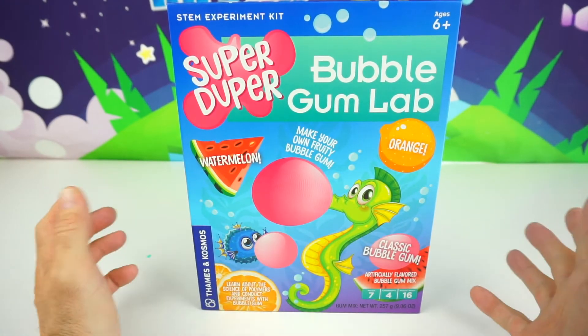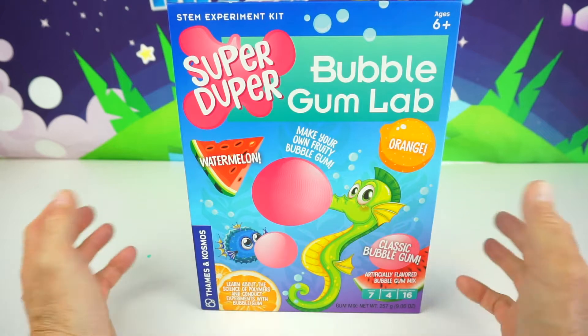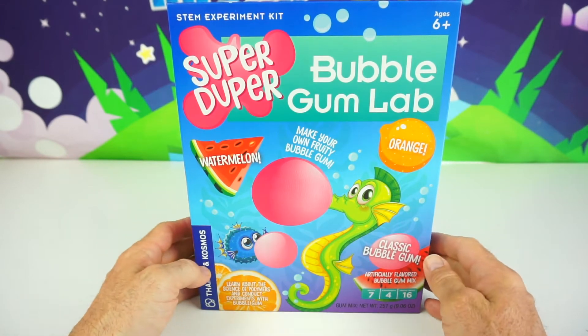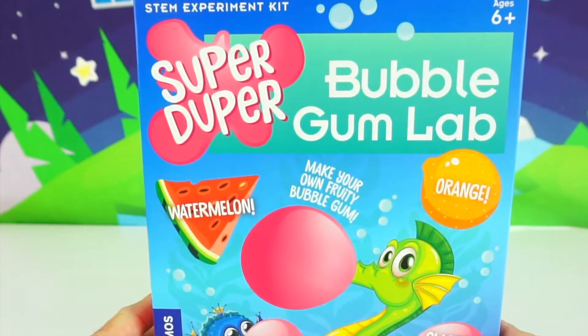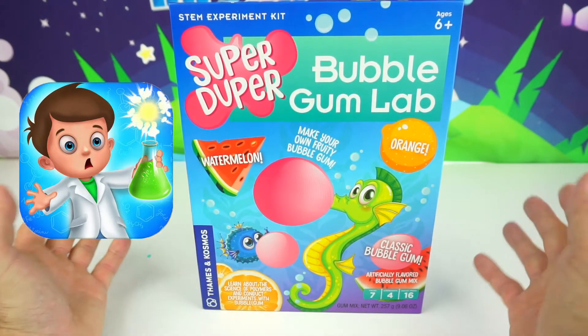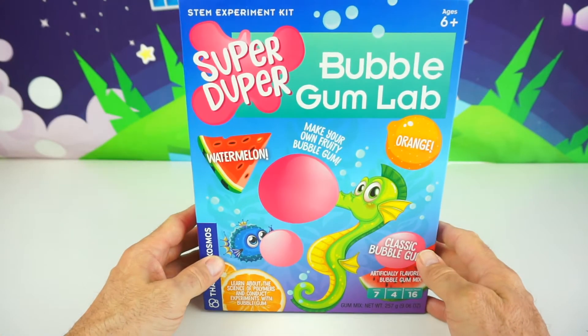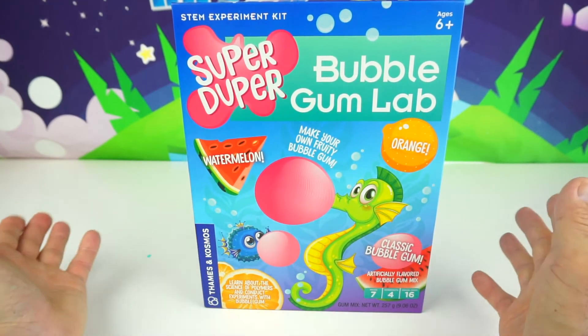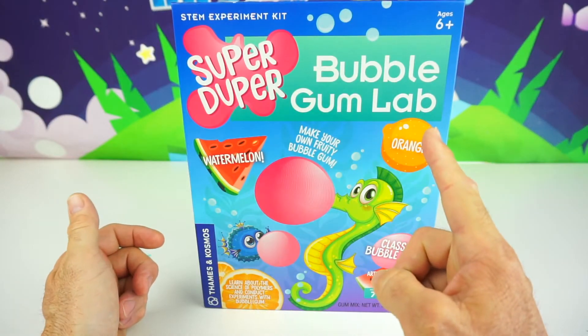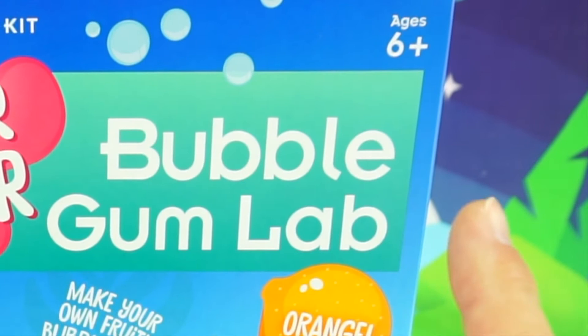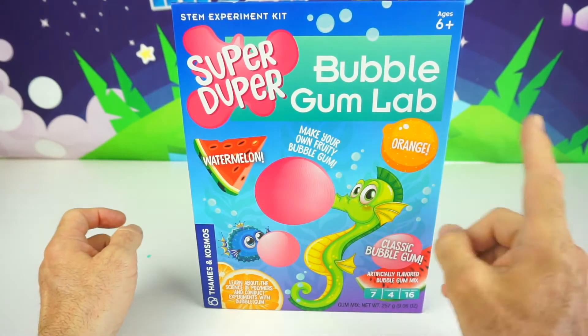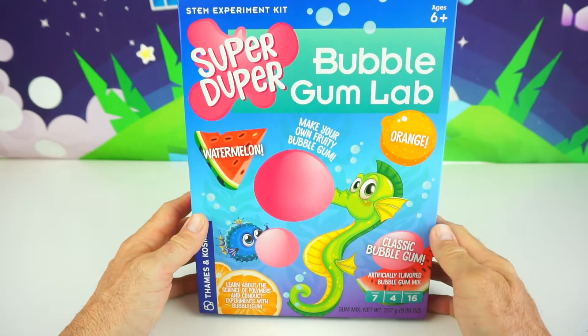Alright kids, today we are going to be making some bubblegum. Well, at least we're going to try to make some bubblegum because it is a science experiment and not all experiments come out all the time. But if we fail, we will try again. But we have the Super Duper Bubblegum Lab. And this is for ages 6 plus. And we will be making watermelon, orange, or classic bubblegum flavor.